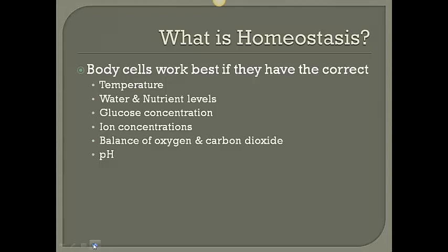And then finally, pH. Acidic conditions, basic conditions, and neutral conditions are all important because the body needs different pH conditions for different reactions. For example, your stomach is very acidic, and it needs to maintain that acidic pH no matter what you eat or put into your stomach.